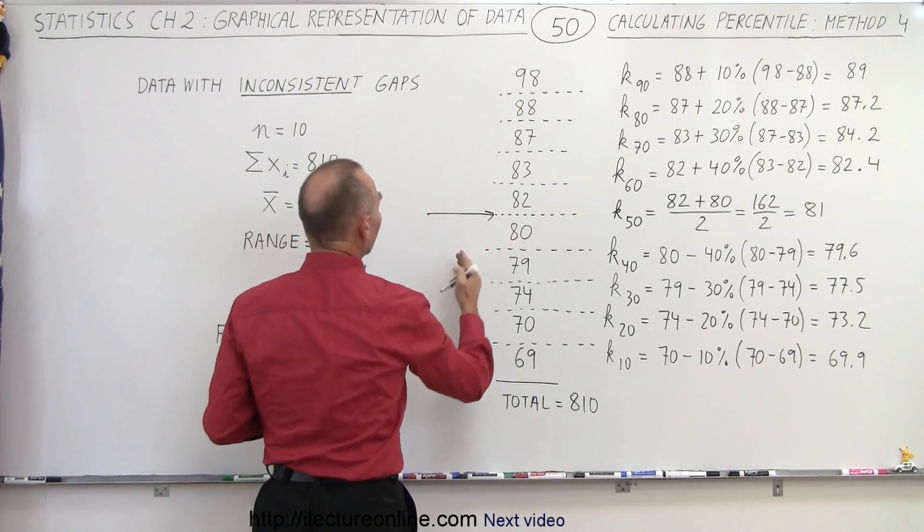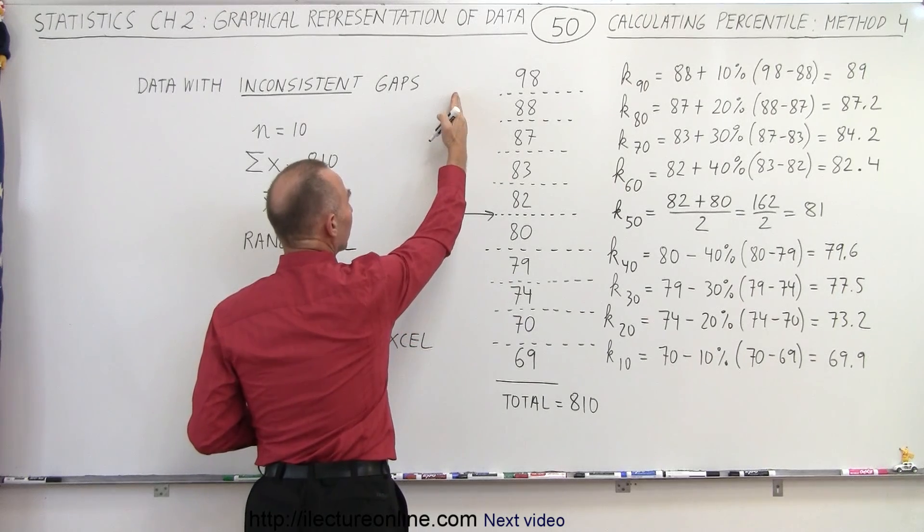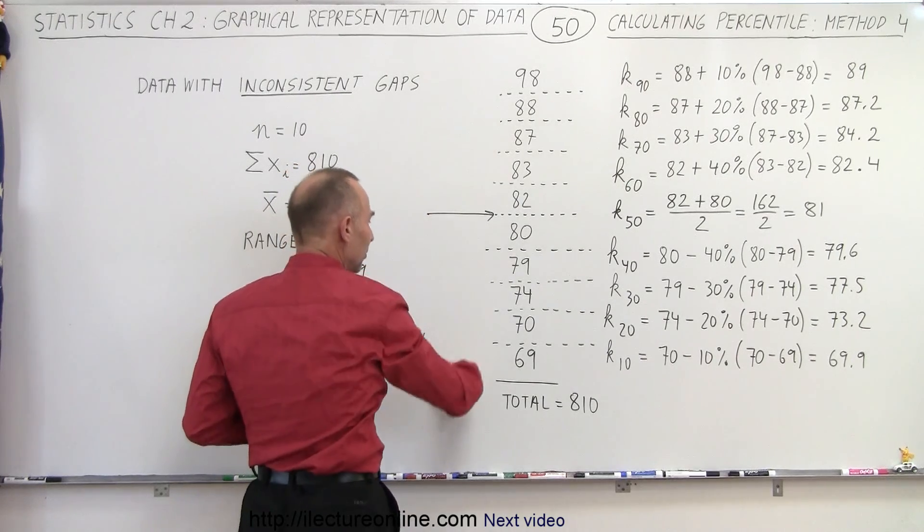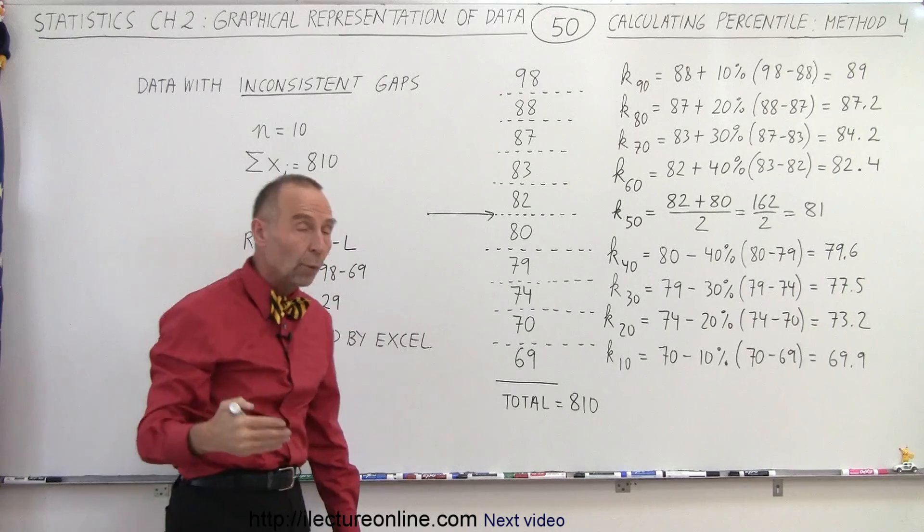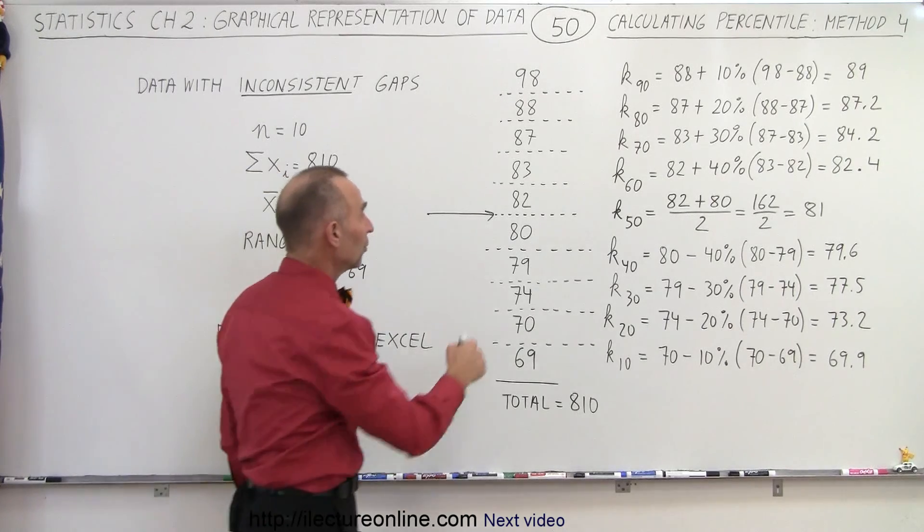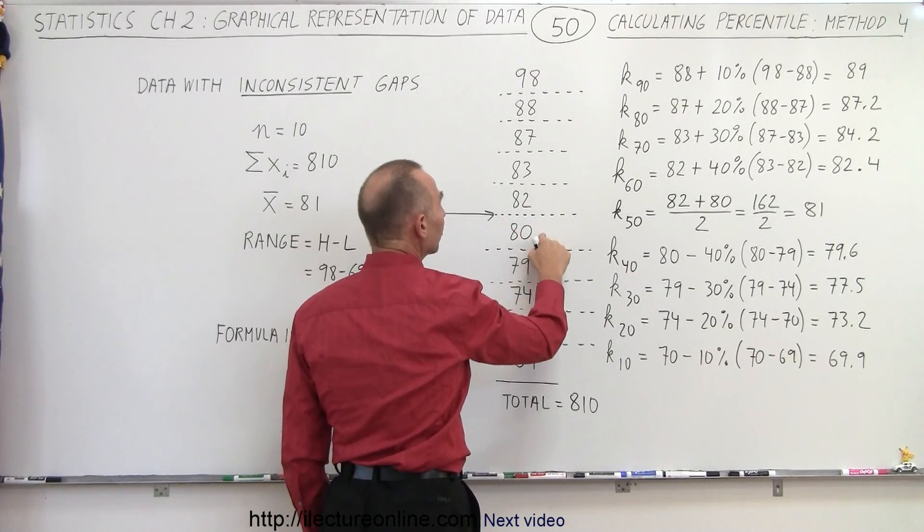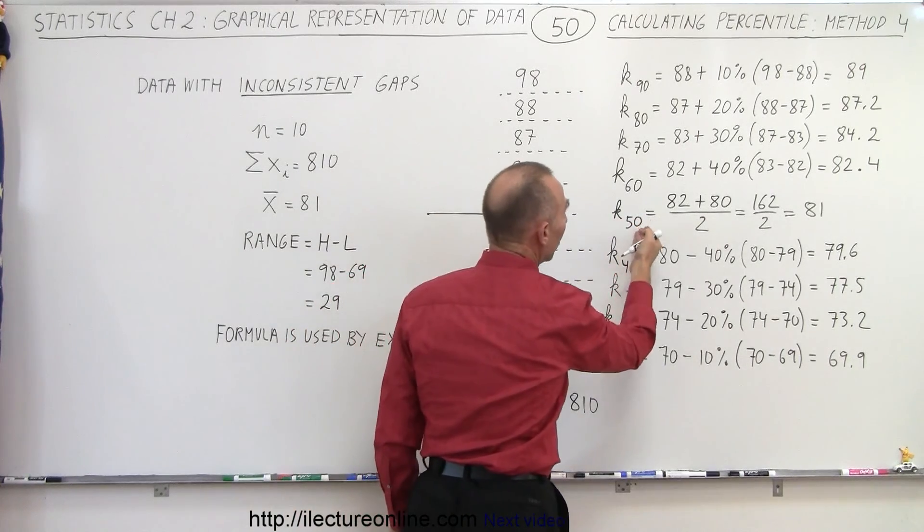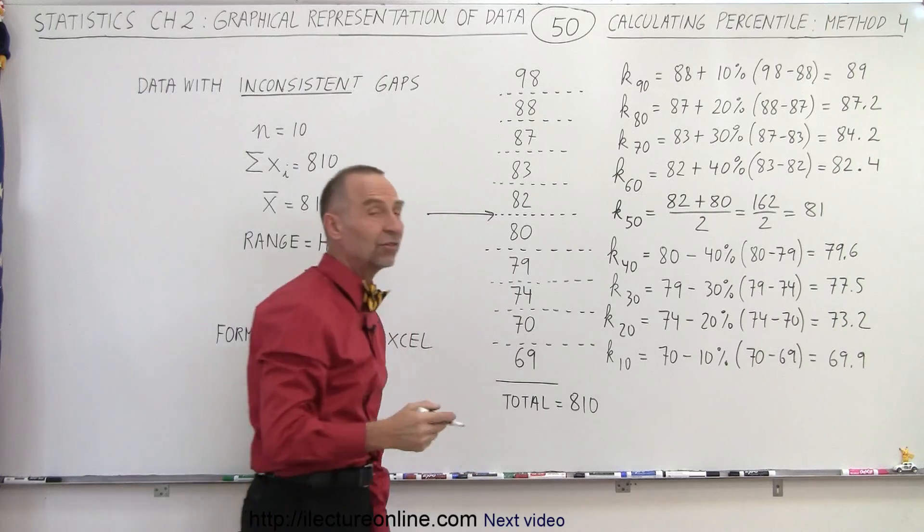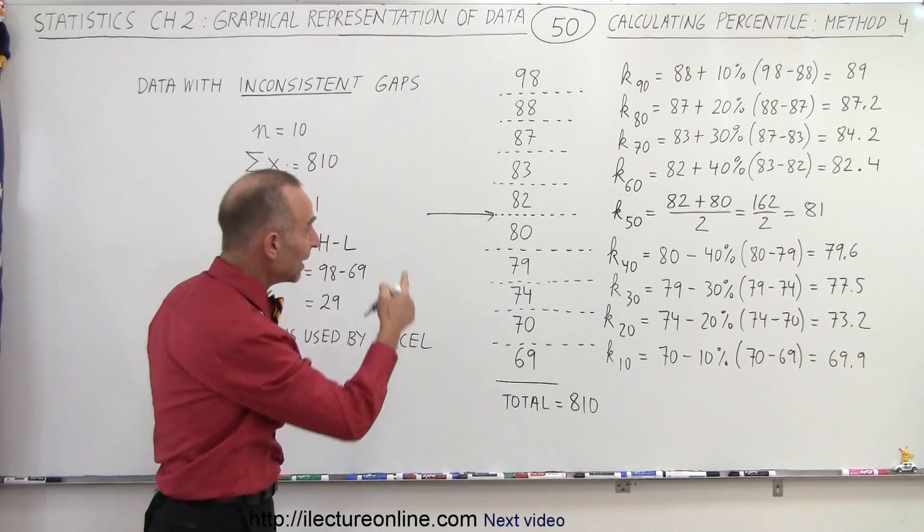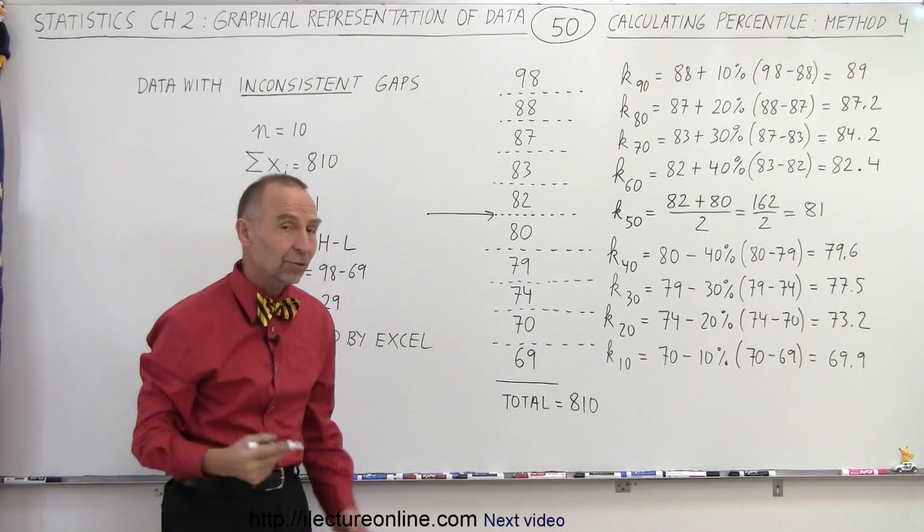At this point, we realize we have 50% of the data points that are higher and 50% of the data points that have lower values. And so since there's a small data set, we take the values on either side of that boundary and we take the average and we call that the 50th percentile. So in this case, the 50th percentile would be the average between 80 and 82, which is 81.